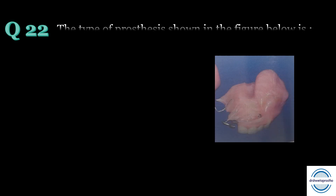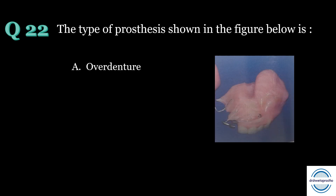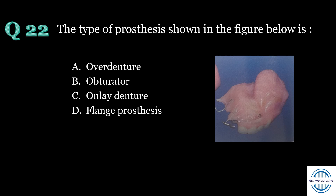Question number twenty-two: the type of prosthesis shown in the figure below is — A. Overdenture, B. Obturator, C. Only denture, D. Flange prosthesis. The answer is B, obturator. As we can see, this is an obturator with an artificial palate with some teeth and a hollow closed bulb which extends into the defect area. An obturator is a prosthesis usually given for maxillary defects.